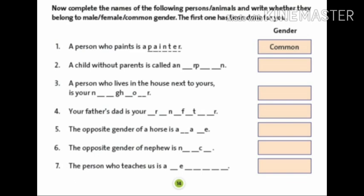Number 5. The opposite gender of a horse is a mare, and the gender is female gender. Number 6. The opposite gender of nephew is niece, and the gender is female gender.